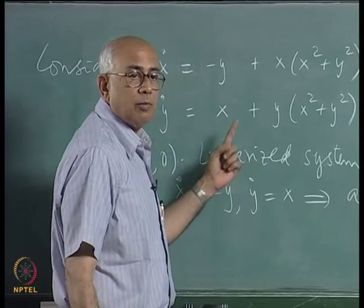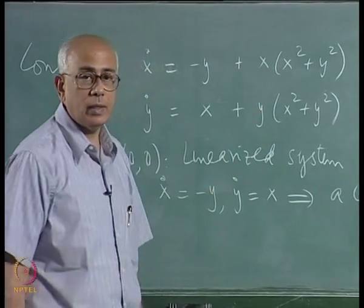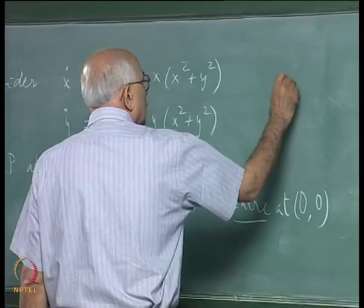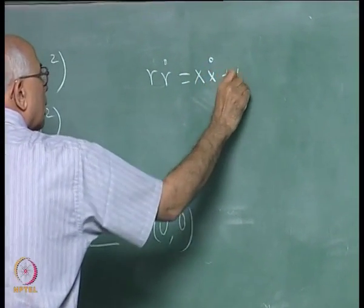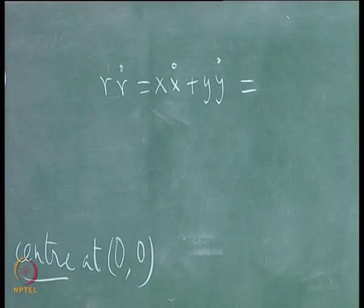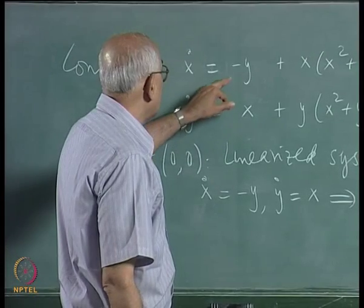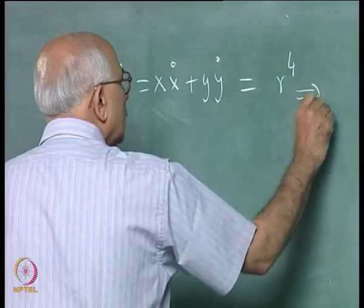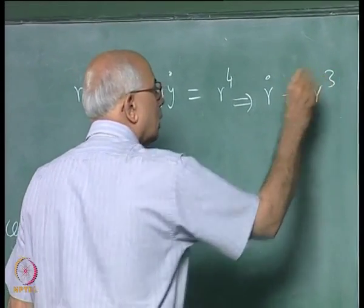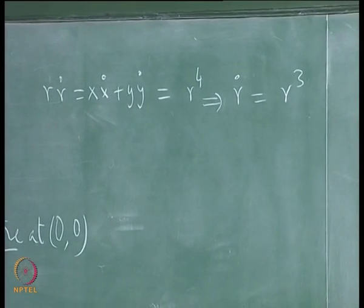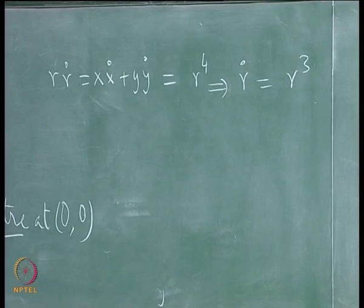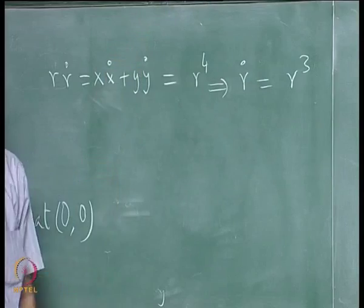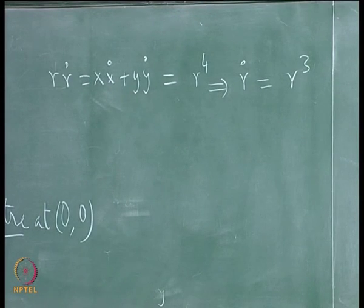On the other hand, we can solve the entire full non-linear system because of the form of the non-linearity. All I have to do is use the fact that r times r-dot is x times x-dot plus y times y-dot. If I do that, I multiply the first equation by x and the second by y and add them; the cross terms cancel and I end up with r-dot equal to r to the power 3.